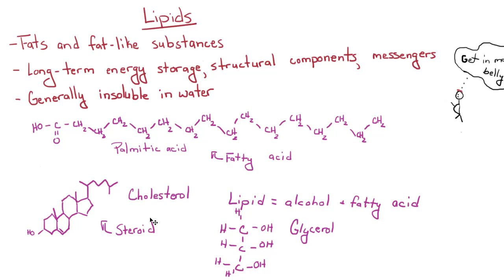This is called palmitic acid. Another example of a lipid would be cholesterol, which is a steroid. Steroids usually have this structure — a couple of rings, some methyl groups, and a hydroxyl group right here. Most steroids act as hormones. Cholesterol is found in your cellular membranes. An actual lipid molecule is an alcohol and a fatty acid. Most lipids are triglycerols. Glycerol is this molecule right here — it has three alcohols on it, and attached to those three alcohols will be three fatty acid chains, such as palmitic acid.